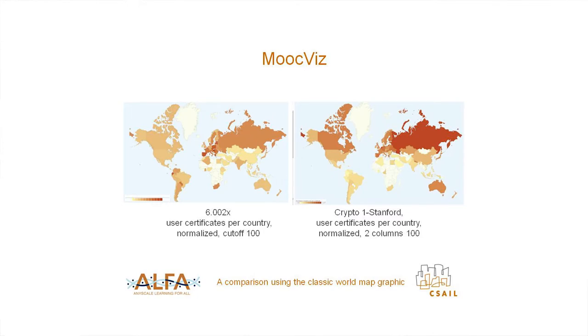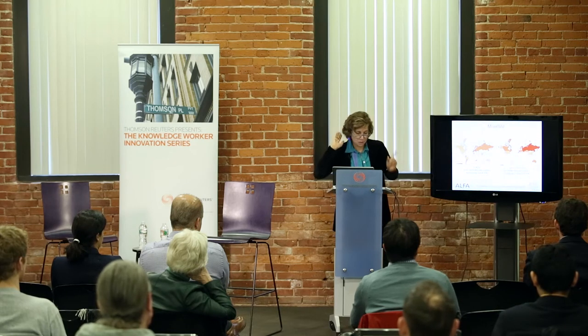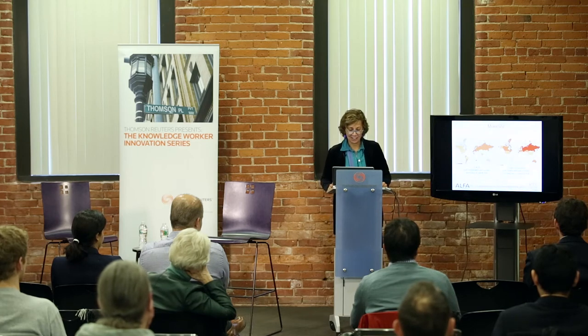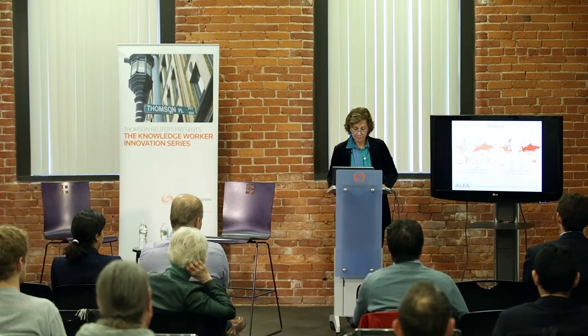Once Stanford converted its database, we shipped our software over to them and all of a sudden these two courses were side by side. What you're seeing here is a map that highlights the percentage of students from a country who gained a certificate relative to how many registered. You can see that the MIT course in circuits and systems was extremely popular in Europe — the highest frequency of certificate earners was Spain. But the crypto course turns out to be really popular in Asia and Russia.